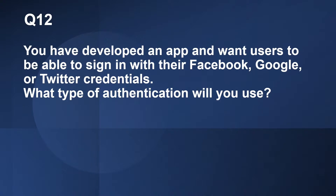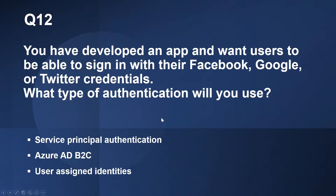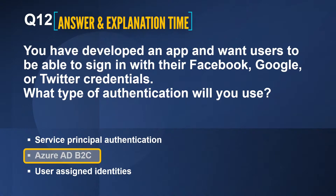Question number 12. You have developed an app and want users to be able to sign in with their Facebook, Google, or Twitter credentials. What type of authentication will you use? The options are service principal authentication, Azure AD B2C, and user assigned identities. The correct answer is Azure AD B2C. Azure AD Business to Customer allows external users to log in with their preferred social media account — such as Facebook, Google, or Twitter — to sign into your application.